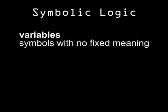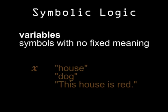Since their meanings wouldn't be fixed, these symbols would vary, so they're called variables. To make it easy on ourselves, we'll use very simple symbols for variables, like x. We can use these variables for words — this x can mean a house, but it's not limited to that value; it might mean a dog. It might also represent an entire statement, like 'this house is red' or 'I'm speaking English.'